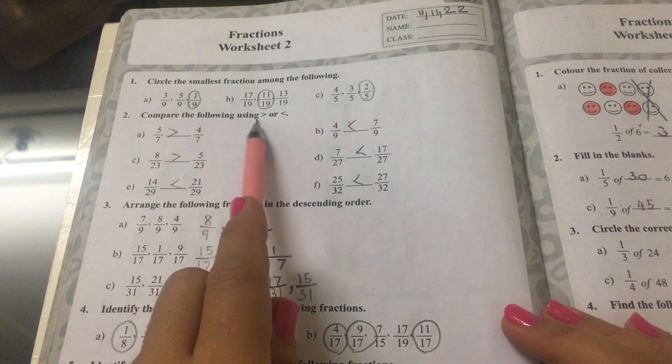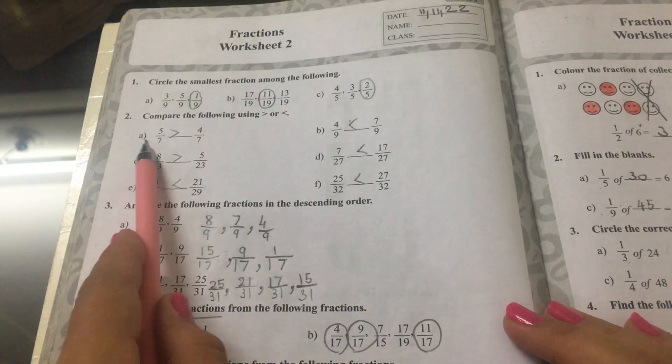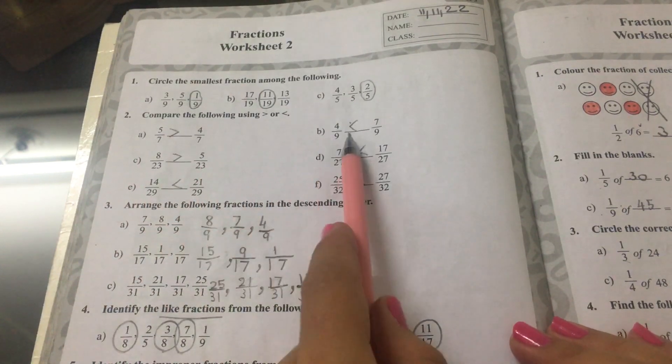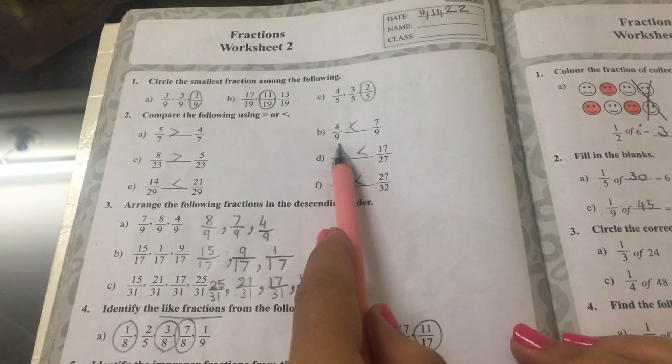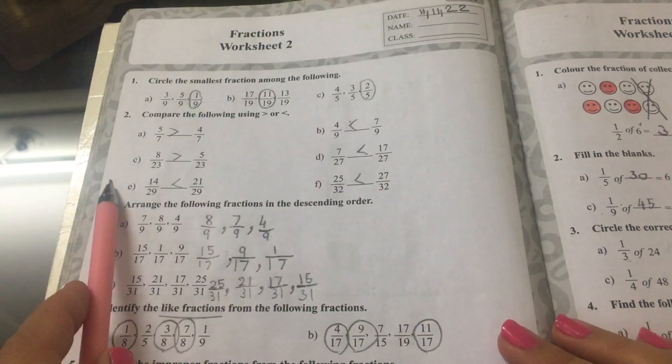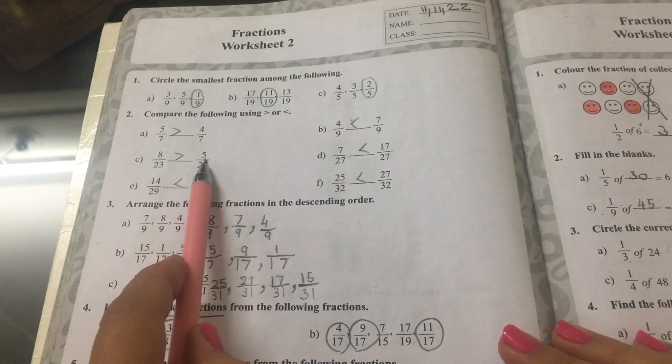Number 2. Compare the following using greater than or smaller than. A, 5 sevenths greater than 4 sevenths. B, 4 ninths smaller than 7 ninths. C, 8 eighths greater than 5 fifths.